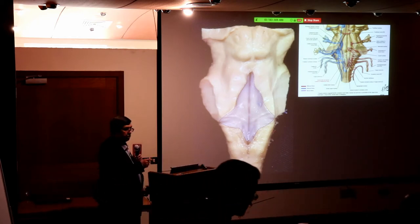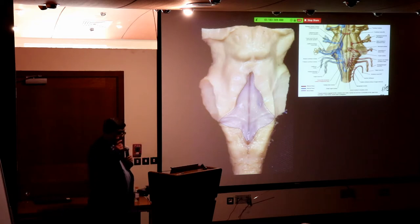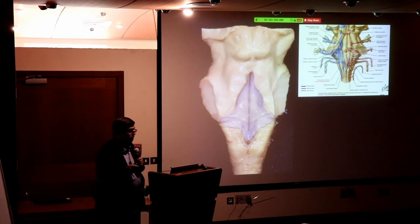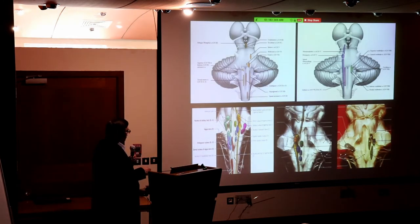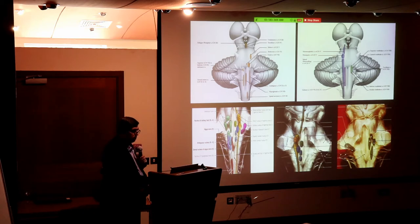The weakness point of any doctor is neurology, and the weakness point of neurology is the brain stem. It looks complex but when you understand it, it is easy. There are nuclei of the cranial nerves — the motor ones and the sensory ones. It looks complex but is not, if you start with one and build upon it step by step.